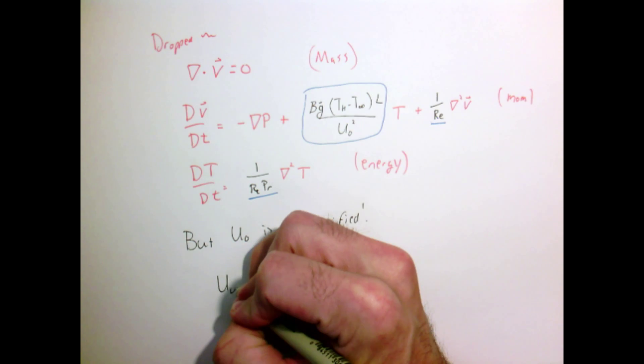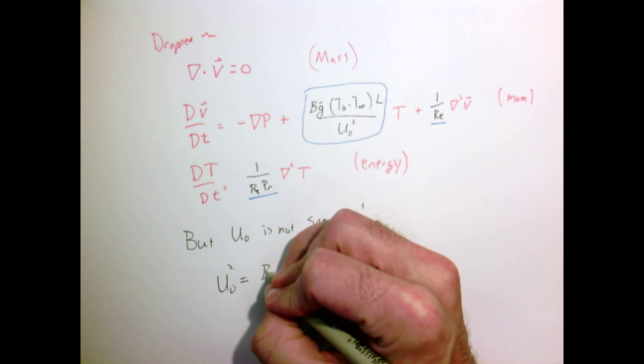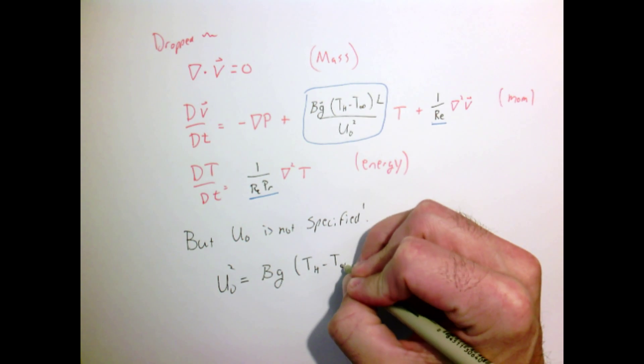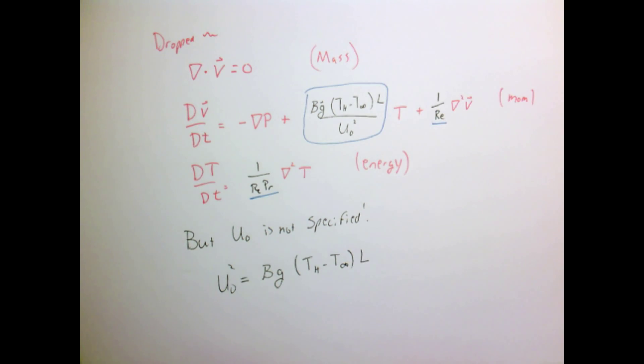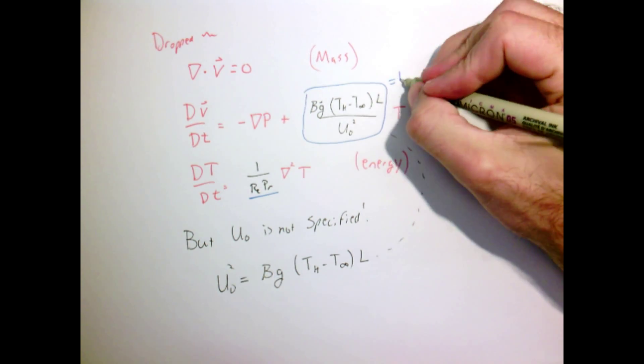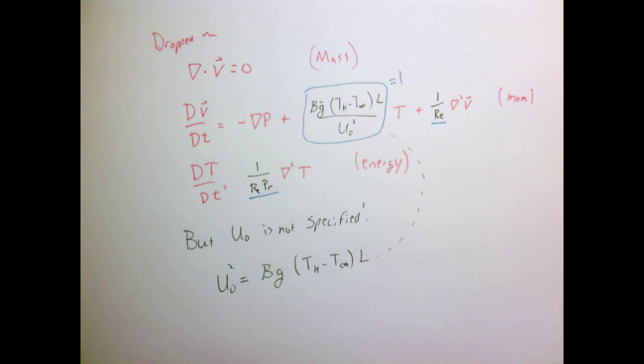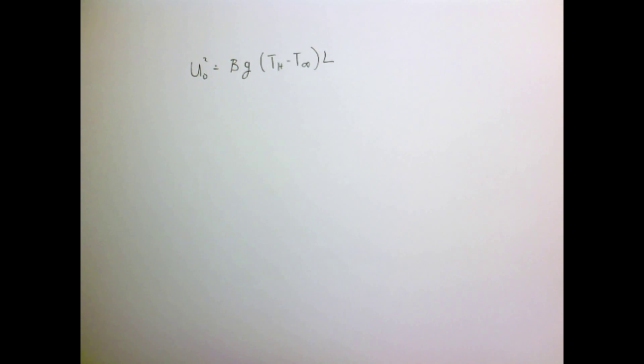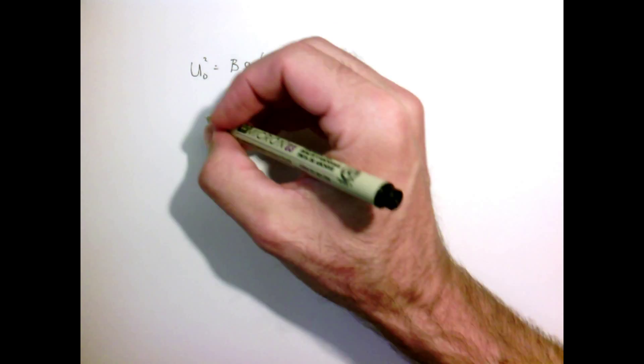Let's pick u₀² to equal the volumetric expansion times gravity times our temperature difference, our hot object to our ambient temperature of the environment, times L. When we set that, that's magically going to set this parameter out here equal to one. That's going to change now what our interpretation maybe is of the Reynolds number. Let's work that out.